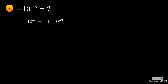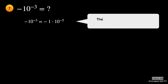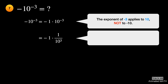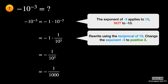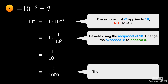The base for the exponent of negative 3 is 10, not negative 10. Rewrite the expression using the reciprocal of 10 and change the exponent to positive 3. It is equal to negative 1 over 10 cubed, or negative 1 over 1000.